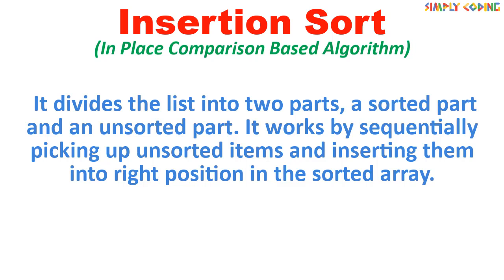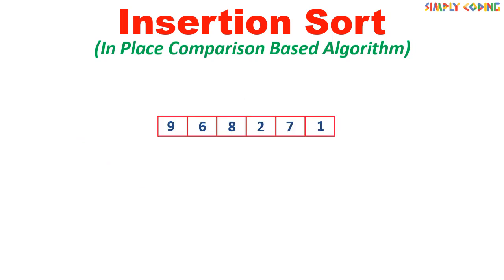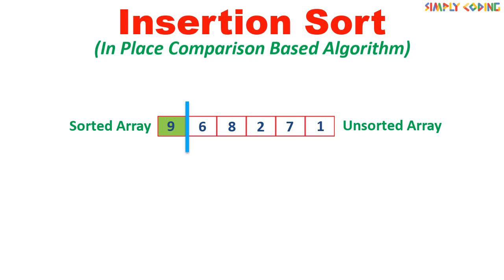Let's see what it means by taking an example list of unsorted numbers. This list is divided into two parts, sorted part on the left and unsorted part on the right. Initially, there is only one element in the sorted side and the remaining list is in the unsorted side.